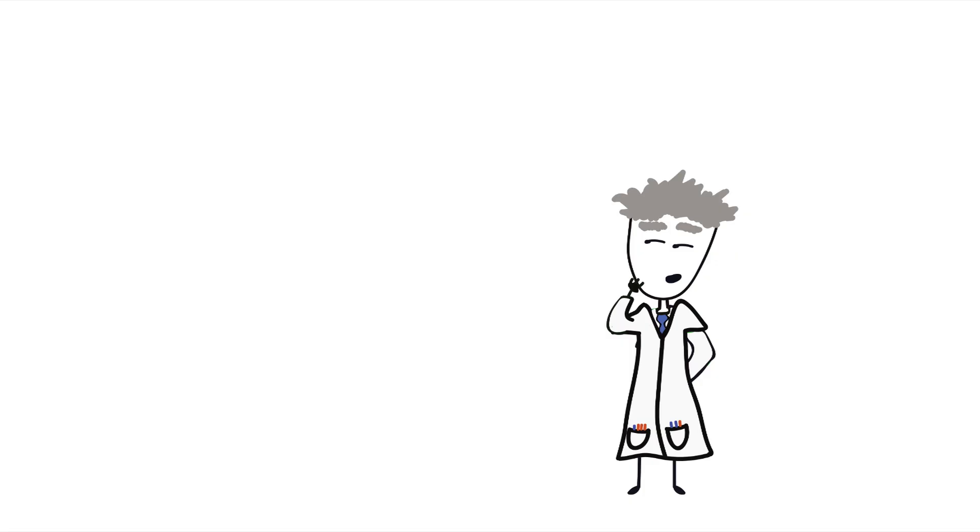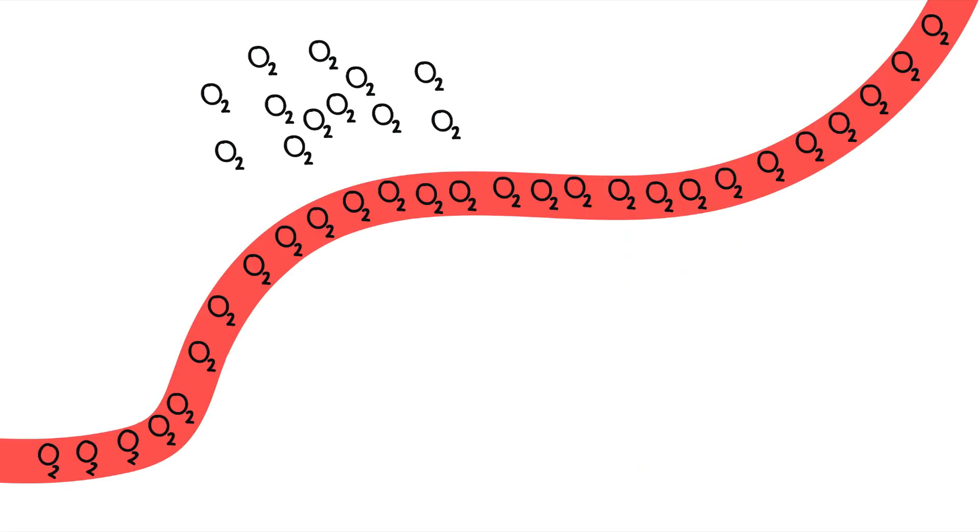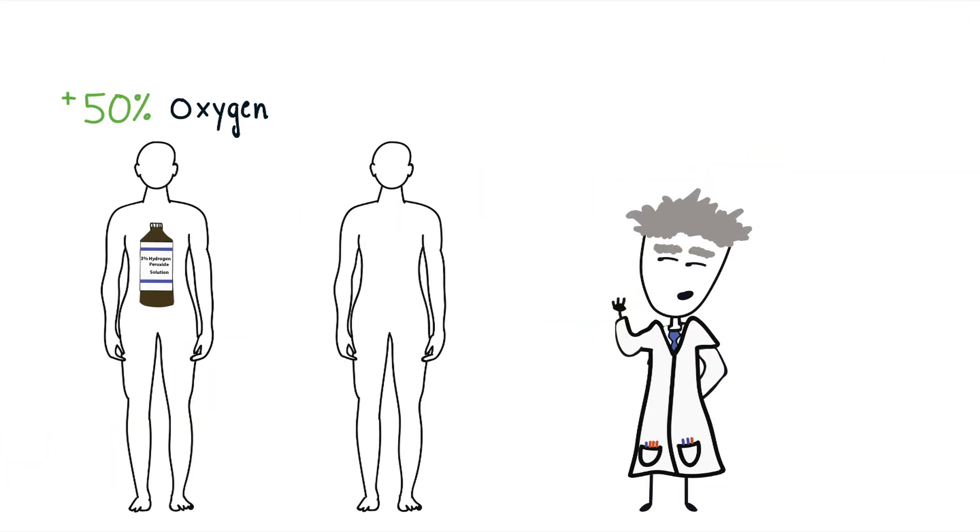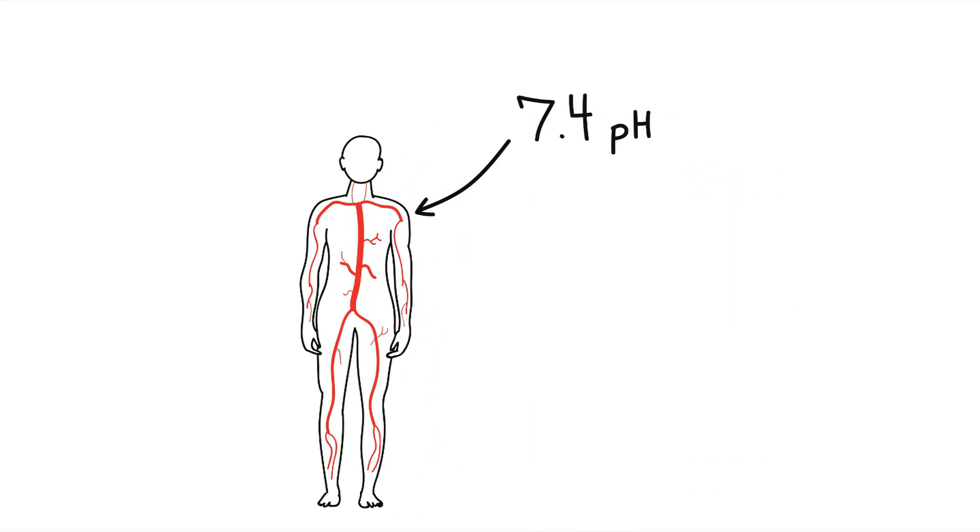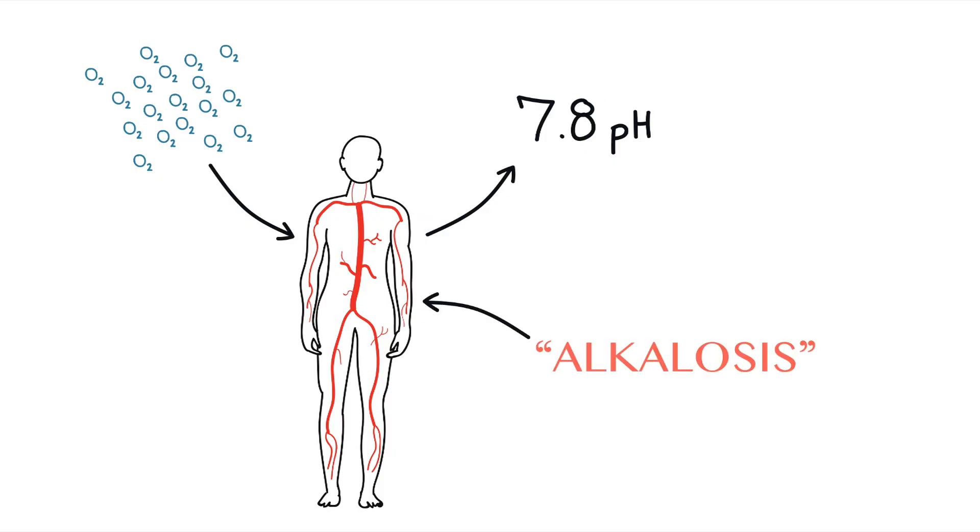And even if it could, there's a limit as to how much oxygen can be in your blood. It's not like you can have 50% more oxygen in your blood than the average person. Too much or too little oxygen in your blood is bad. Your blood pH must stay at 7.4. Just a little high or a little low can be fatal. Too much oxygen raises the pH above 7.4, causing alkalosis.